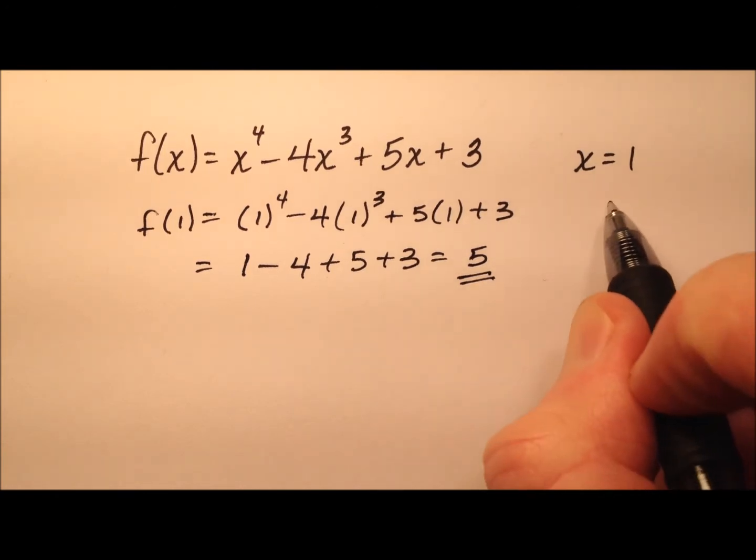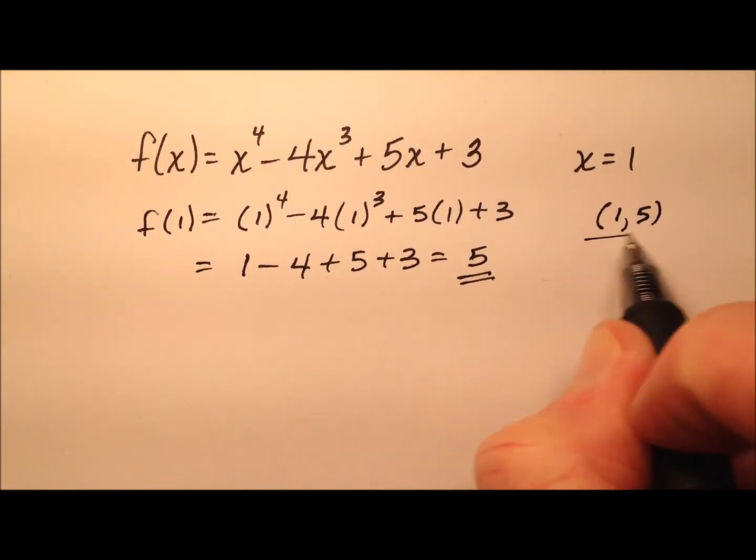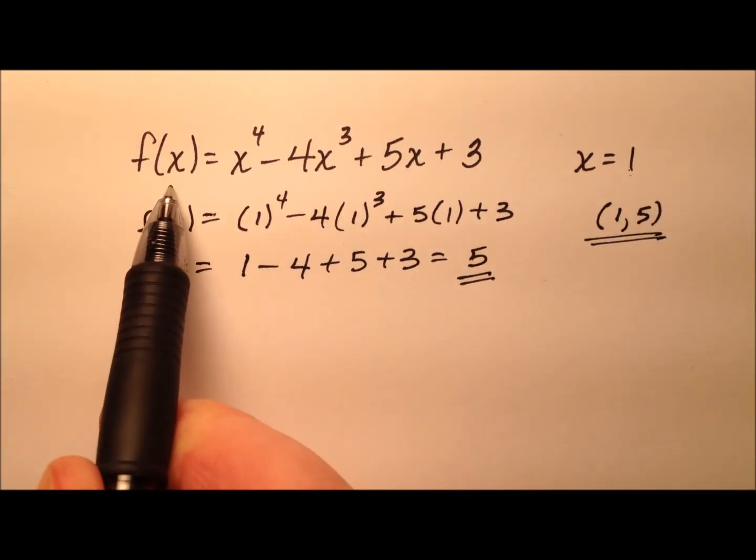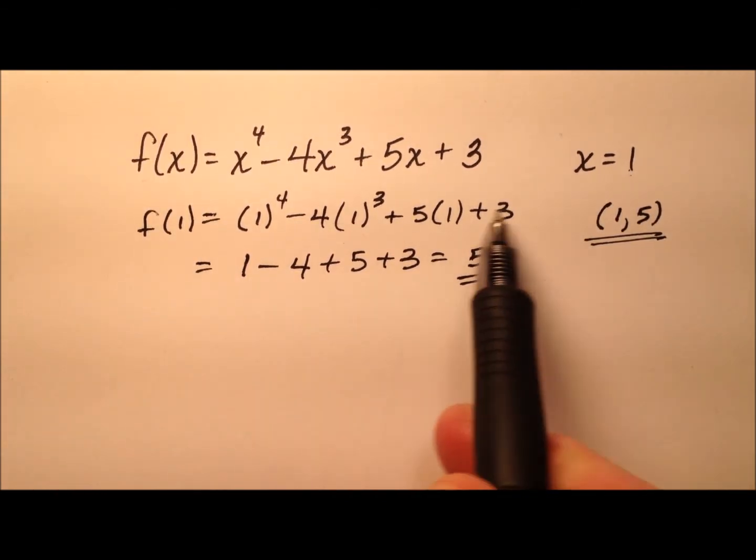So this ordered pair then is (1, 5). And I got that by plugging the x value, which was 1, into our function. So f of 1 is 5.